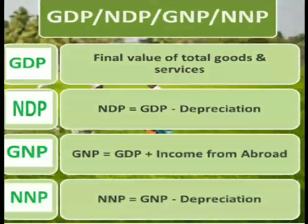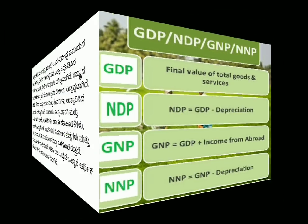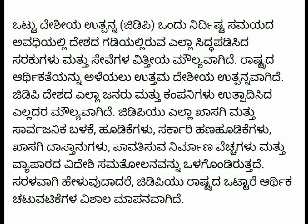So what is GDP, NDP and the formula, GNP and NNP and the formula one by one with example — we can get a complete idea of GDP. GDP is a Gross Domestic Product. The definition of GDP refers to a country's total output.